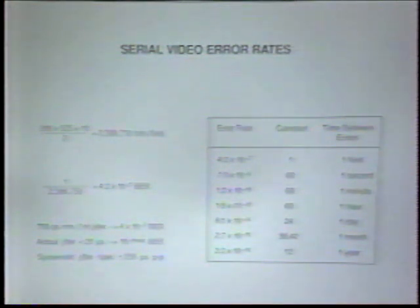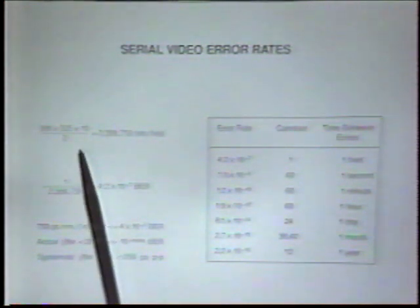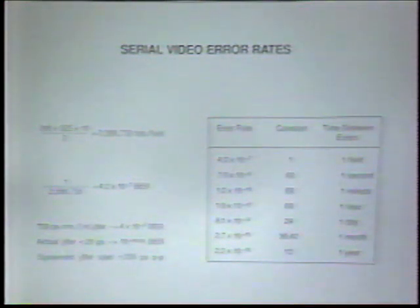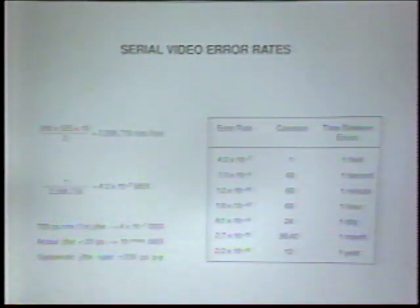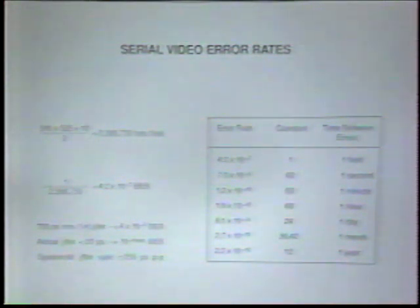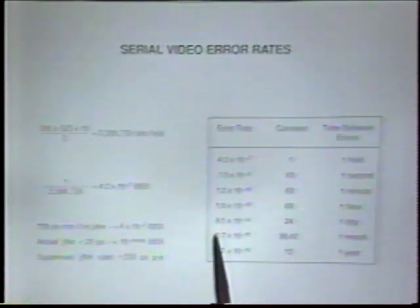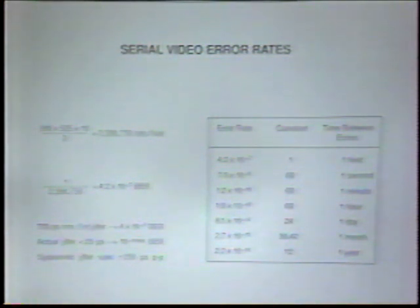Now that we have all this digital information in the serial stream, let's look at what happens if there are errors. In one field of video there are about 2.4 million bits. A bit error rate of 4.2 times 10 to the minus seventh would give one error per field — similar to what you might get on a very well tuned VTR without correction, but unacceptable because you would see one error per field. What we expect from the serial transmission scheme is essentially no errors over long periods; for instance, 8.1 times 10 to the minus 14th would be one error per day.